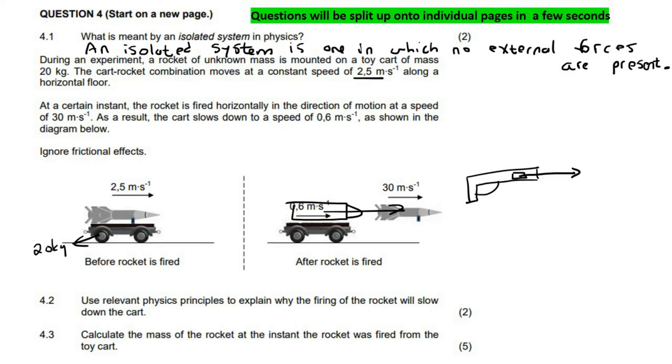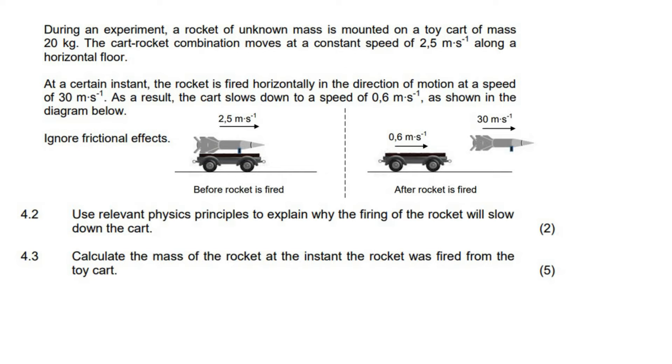Okay, and then it says, as a result, the cart slows down to a speed of 0.6, as shown in the diagram. Okay, so we've got all of that. Now it says, use relevant physics principles to explain why the firing of the rocket will slow down the cart. Now this is Newton's third law, Newton 3.